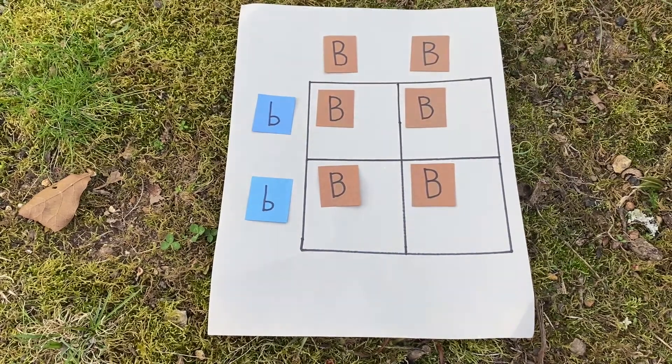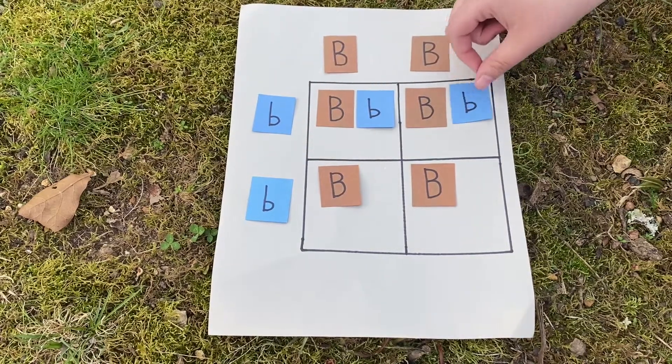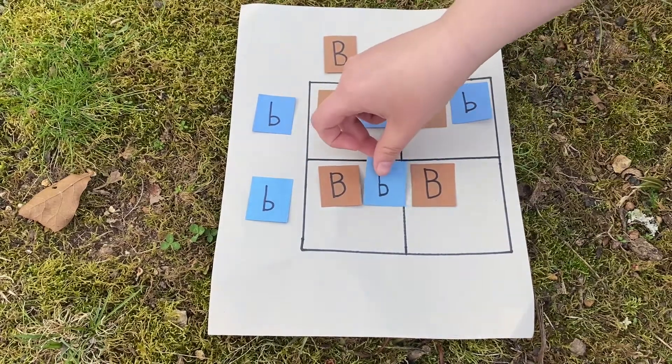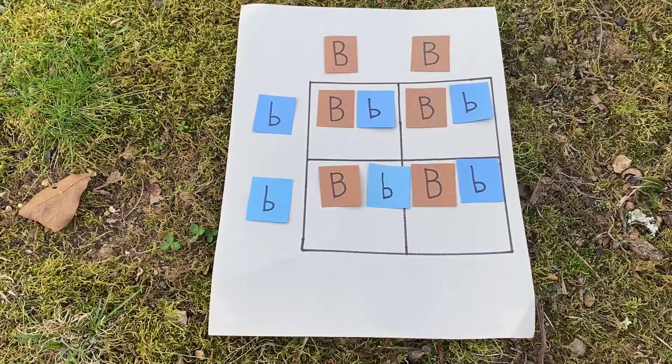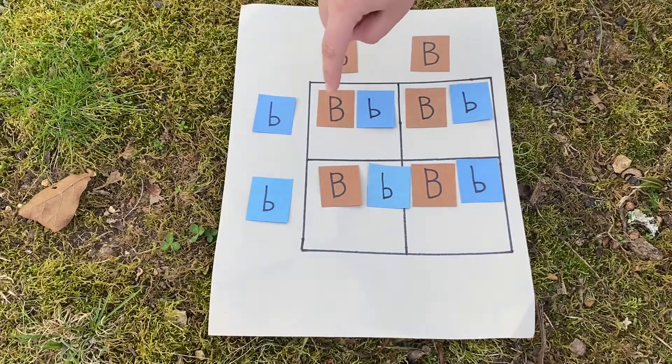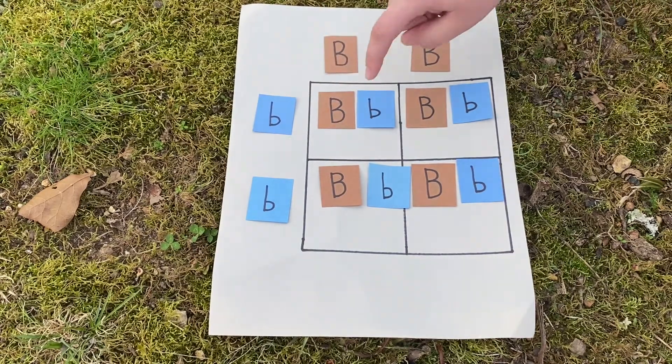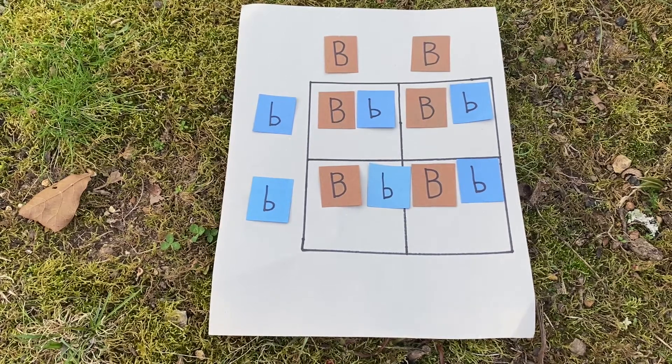Then you look at the second parent. You take their letter and you add in each of the squares as well. So what you see here is that every single kid that these parents are going to have is going to end up with one large B and one little b in their DNA. What this means is that every single one of these kids is going to have brown eyes no matter what.